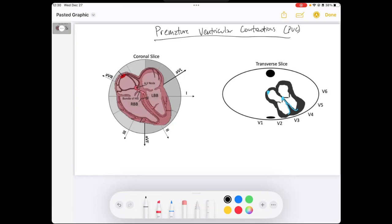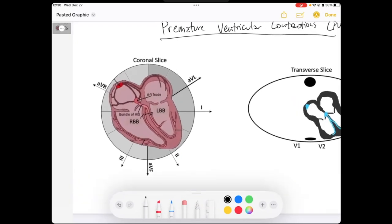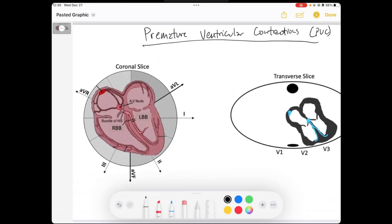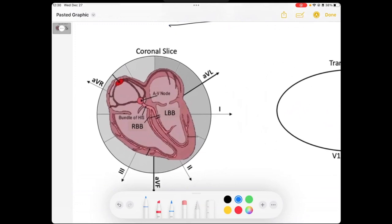So we'll just jump into a PVC. Premature ventricular contractions, as the name suggests, is a premature beat that occurs in the ventricles. So let's talk about what that means.